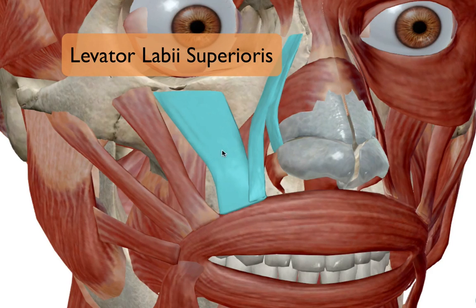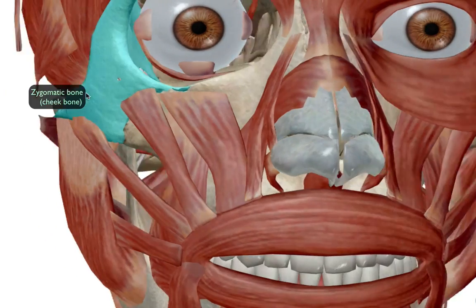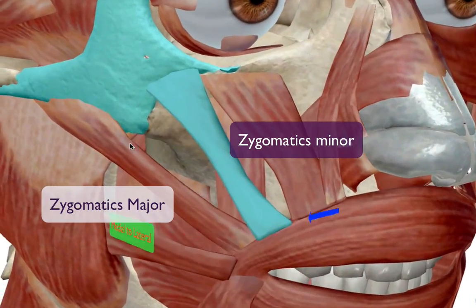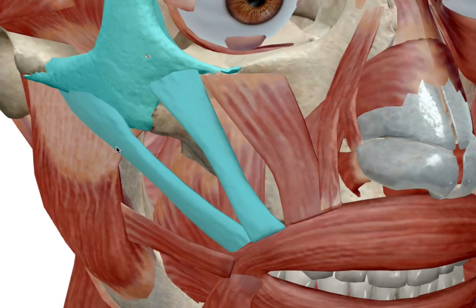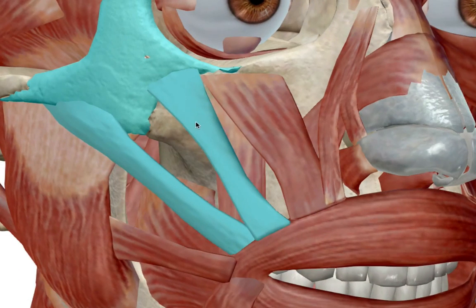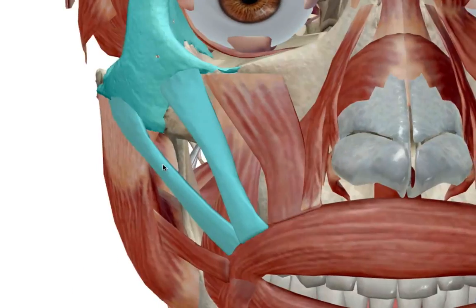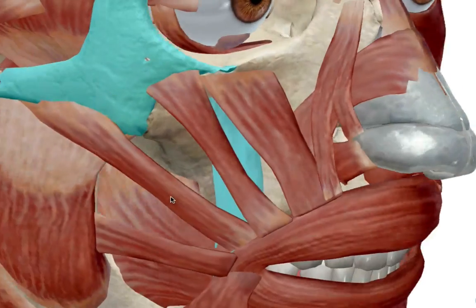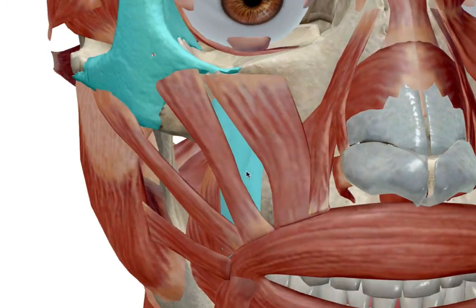Just lateral to the levator labii superioris, we have two muscles attached to the zygomatic bone — our cheekbone. First is your zygomaticus minor, and then just lateral to that, your zygomaticus major. Technically, zygomaticus major and minor are considered to be one muscle, just split by a small gap. There's also your levator anguli oris just inferior to these, which lifts up the side of the lip for a full smile.